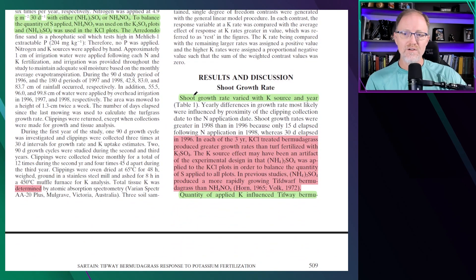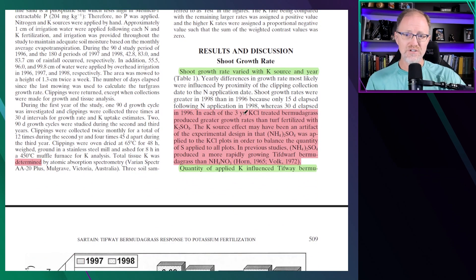Shoot growth rate varied by potassium source in the results and discussion. Dr. Sartain mentions, in each of the three years, potassium chloride-treated grass produced greater turf growth rates than turf fertilized with potassium sulfate. The potassium source effect may have been an artifact of the experimental design in that ammonium sulfate was applied to the KCl plots in order to balance out the quantity of sulfur. He tried to account for the amount of sulfate applying in the potassium sulfate plots by applying ammonium sulfate to the other KCl plots, but he hypothesized that might have actually skewed the results.